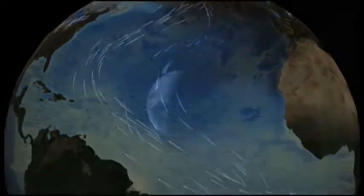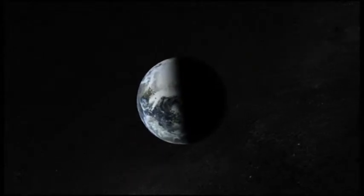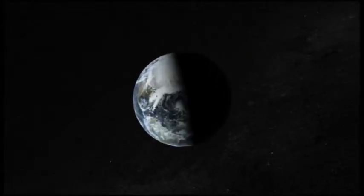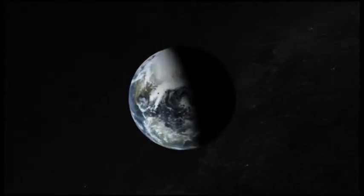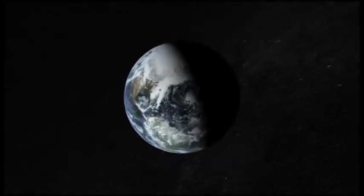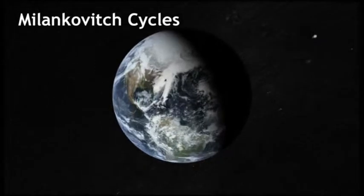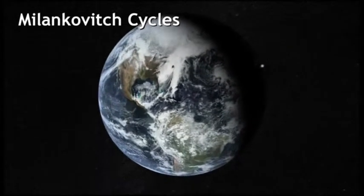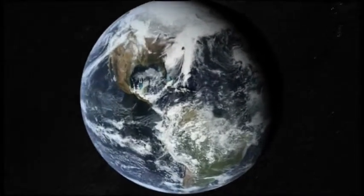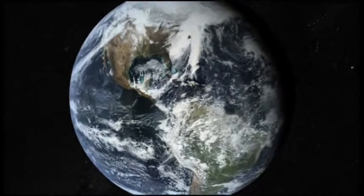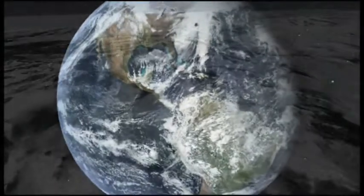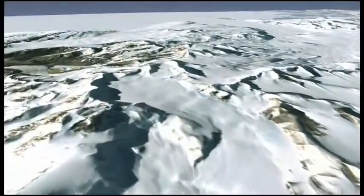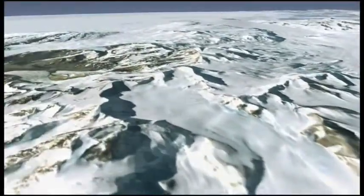Moving out in time as the Earth rotates on its axis, it completes a series of interlocking wobbles called Milankovic cycles every 23 to 41,000 years. They have been blamed for the onset of ice ages about every 100,000 years.